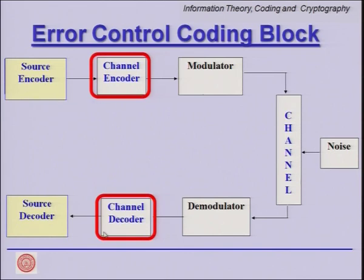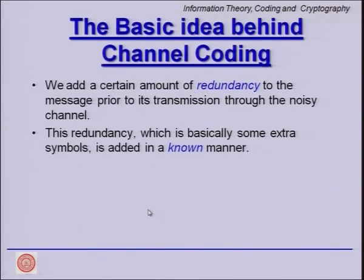The source decoder gives back the original bit stream. In this module, we are focusing on the channel encoder and channel decoder. They exist because of the presence of noise in the channel. The job of the noise is to flip a few bits here and there, and our job of the channel decoder is to recover from these errors.